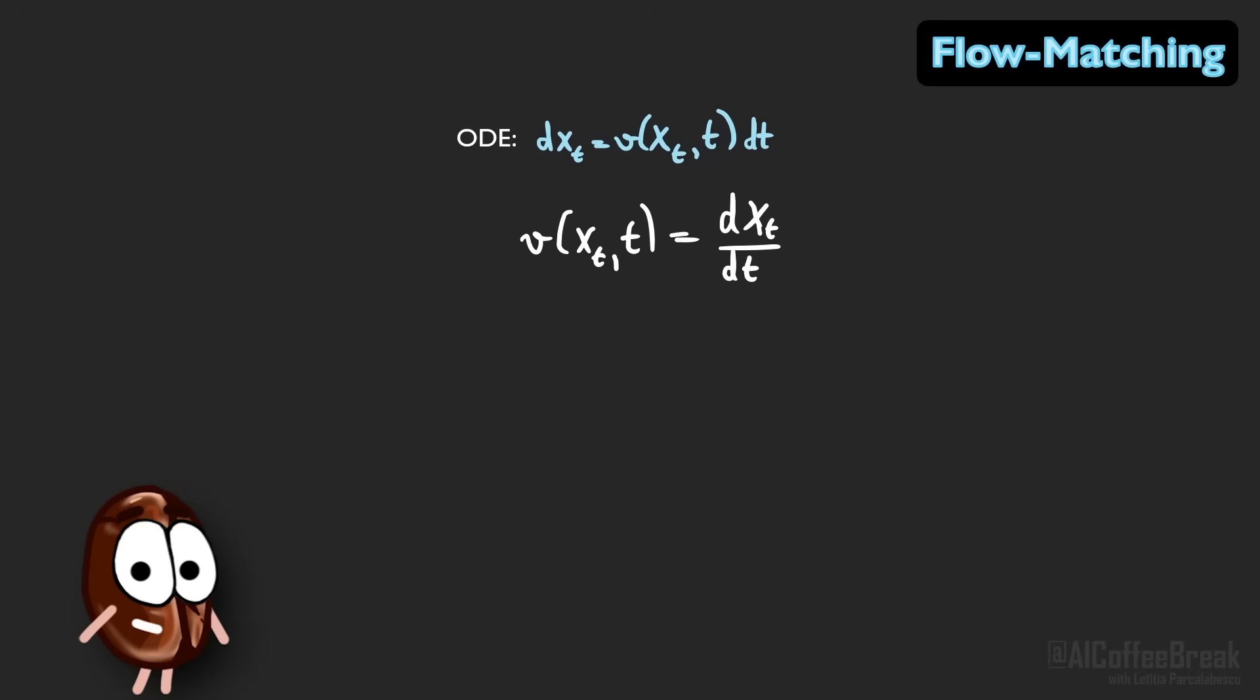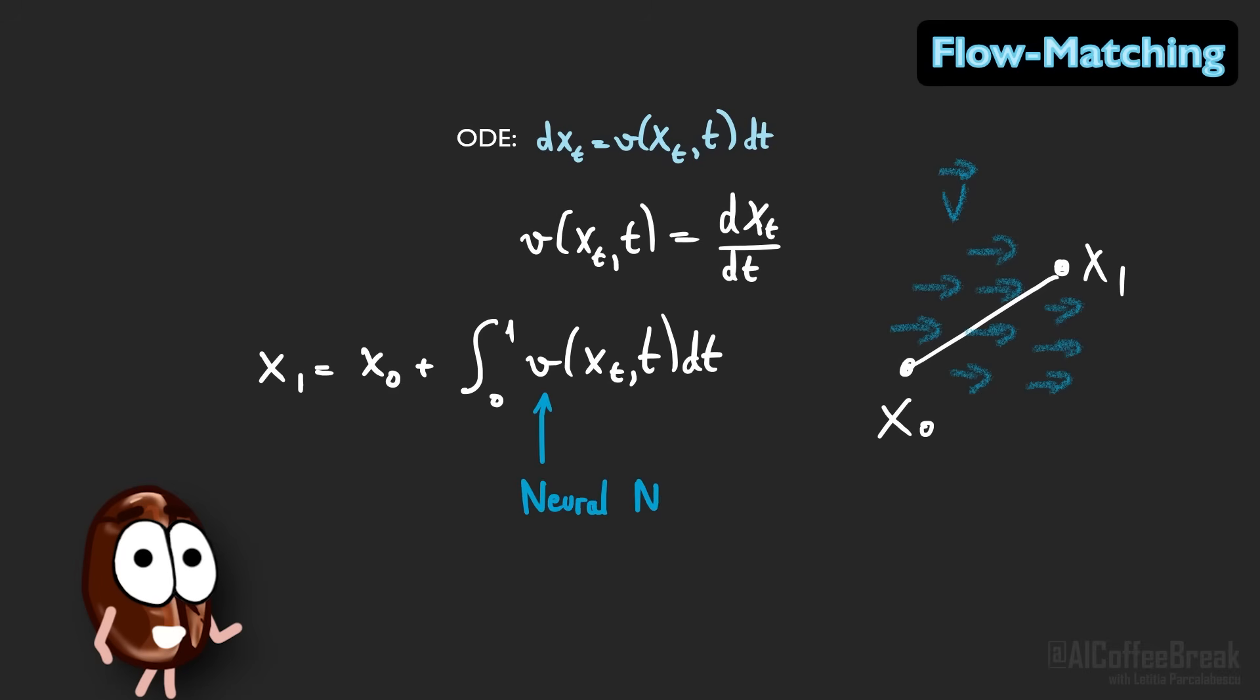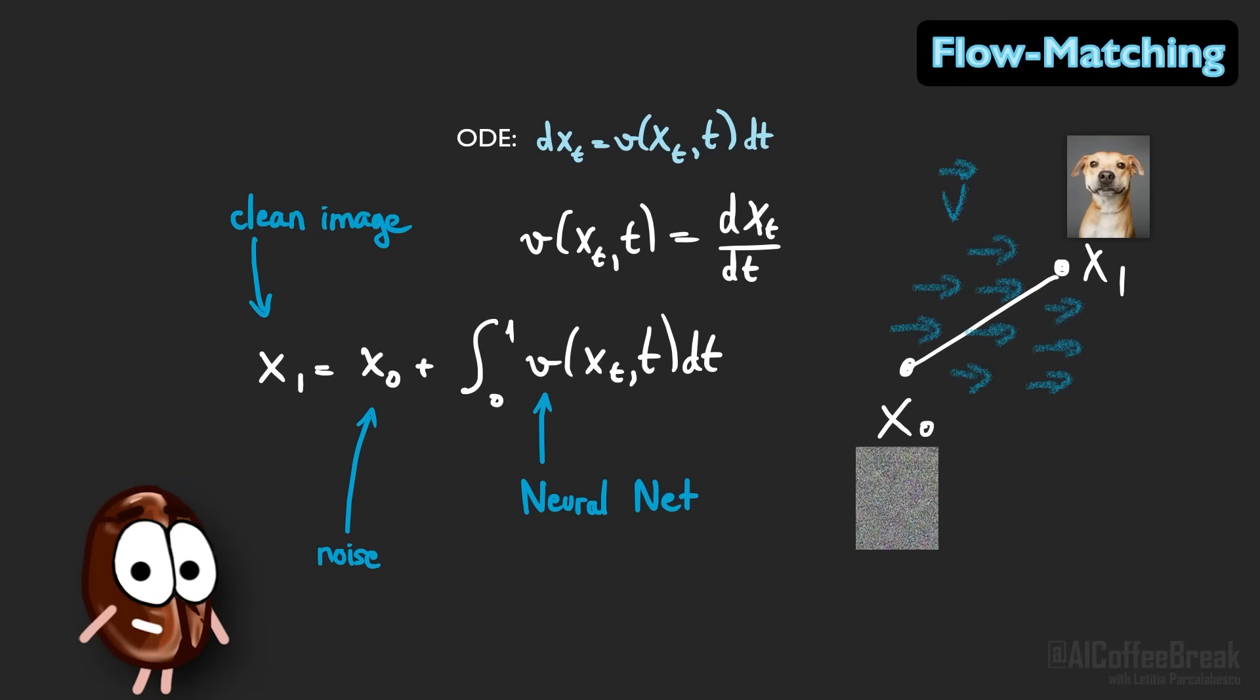You might remember from high school physics that velocity is just a change in position over time. So if we know the velocity field, meaning that we know the velocity at every point in time, we can recover the entire trajectory by integrating it over time. In our case, that means that the final state x1 is simply the starting point x0 plus the integral of the velocity field at every point in time from 0 to 1. So if we train a neural network that learns this velocity field v, we can use it to move from a random noise x0 all the way to a clean image x1 just by following this equation. What does this concretely mean and how do we train a flow matching model?